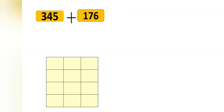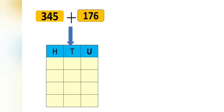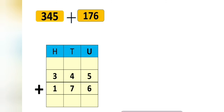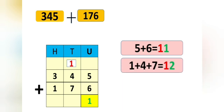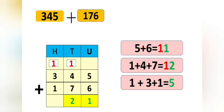One more example is here in front of you: 345 plus 176. This is the units place, tens place, and hundreds place. Now let us put these numbers in their proper places. Let us add the units place first. 5 plus 6 is equal to 11. So we will write 1 in the units place and this 1 will go as a carry over in the tens place. Now let us add the tens place: 1 plus 4 plus 7 is equal to 12. So we will write 2 in the tens place and 1 will go in the hundreds place. Now let us add the hundreds place: 1 plus 3 plus 1 is equal to 5. So we will write 5 in the hundreds place.